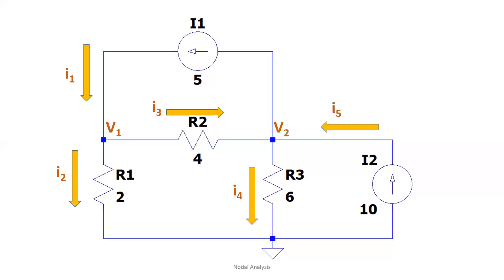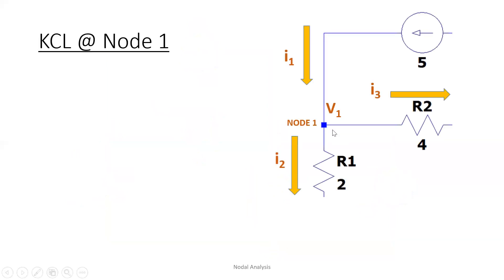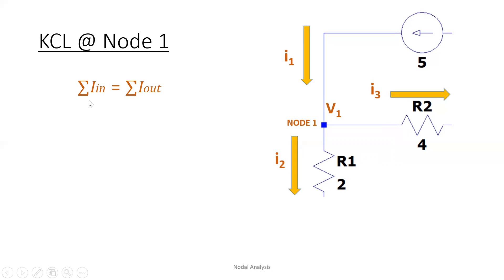Next, we already know the current directions. Third step: perform KCL per node. At node 1, we have I1, I2, and I3 — three branches, three currents going in and out. The current going in is I1 only, and the currents going out are I2 and I3. The summation of currents going in equals currents going out — that is our KCL.